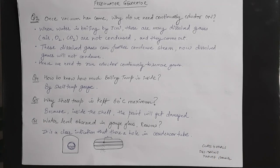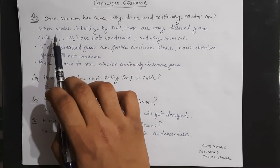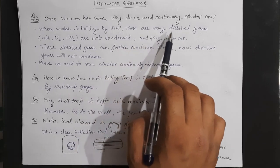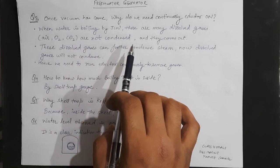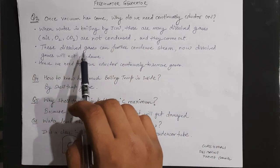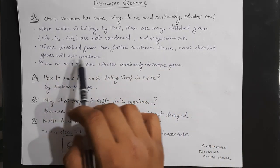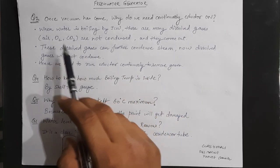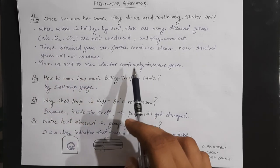The third question is: once the vacuum has come, why do we need to continuously keep the ejector on? When the water is boiling by the jacket cooling water, there are many dissolved gases — air, oxygen, CO2, etc. — which are not condensed and they come out. These dissolved gases will not condense and can hinder further steam condensation. Therefore, to keep on removing these dissolved gases, we need to continuously run the ejector to remove them.